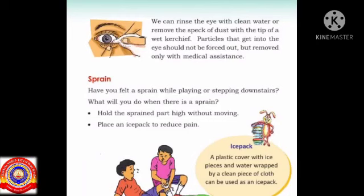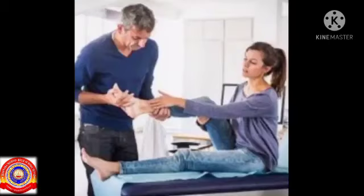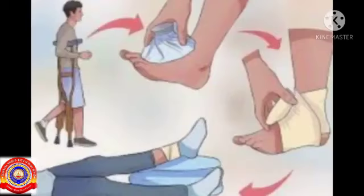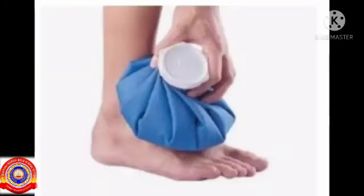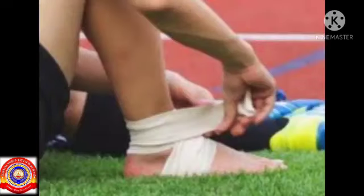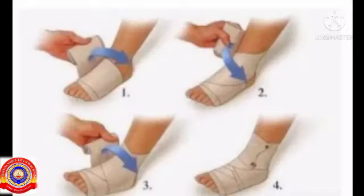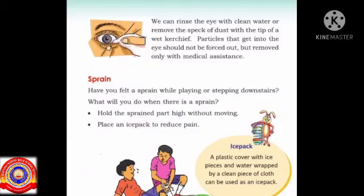Mostly, sprain occurs in our ankles. What will you do when there is a sprain in your ankle? The first step is to hold the sprained part high without moving. Then, place an ice pack on the injured part to reduce pain. An ice pack is a plastic cover with ice pieces and water wrapped by a clean piece of cloth. Then, wrap the injured part with an elastic bandage.